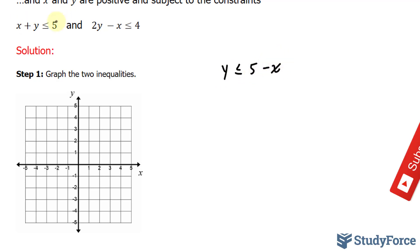Notice that I brought this x over. And similarly, this equation can be rewritten so that it looks like this: 2y is less than or equal to 4 plus x. Divide both sides by 2. You end up with y is less than or equal to 2 plus 1 over 2x.